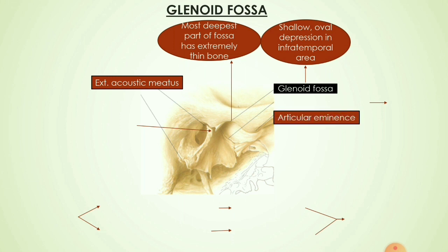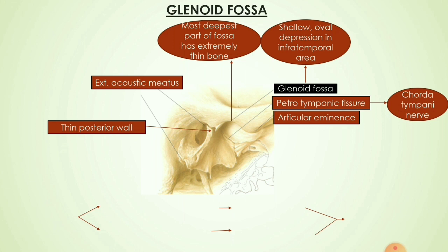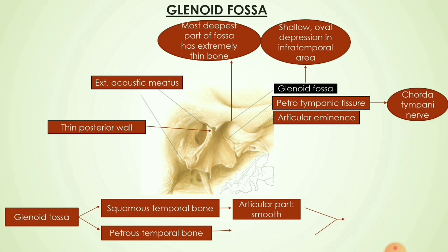The glenoid fossa is anteriorly bounded by the articular eminence. Through the glenoid fossa runs a petrotympanic fissure, through which the chorda tympani nerve exits. There is a thin posterior wall present behind the glenoid fossa separating it from the external acoustic meatus. The glenoid fossa occupies both the squamous temporal bone and the petrous temporal bone. The squamous temporal bone is the articular part — smooth and covered with thick periosteum — whereas the petrous temporal bone is the non-articular part, in close approximation with the parotid gland and hence pitted.